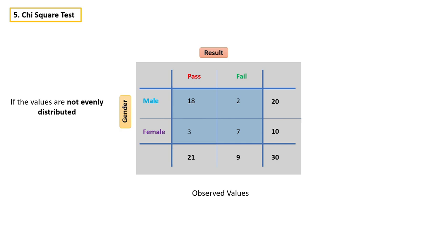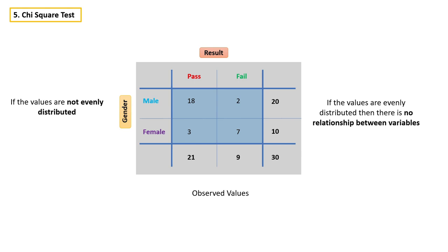Which means if the values are evenly distributed, then there is no relationship between variables. It makes sense, right? If the values are not evenly distributed, that indicates there is a relationship between gender and result. And if the values are evenly distributed, that indicates there is no relationship between variables.